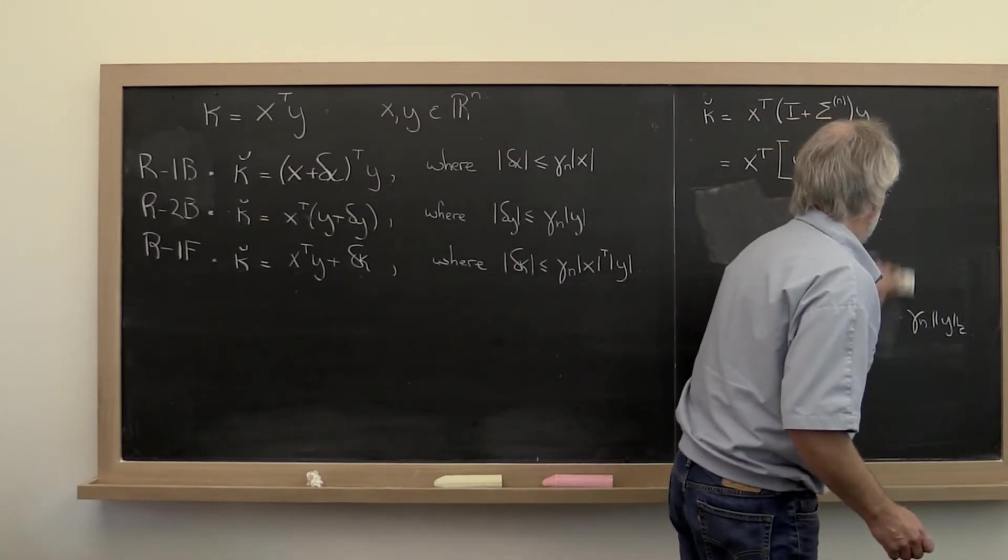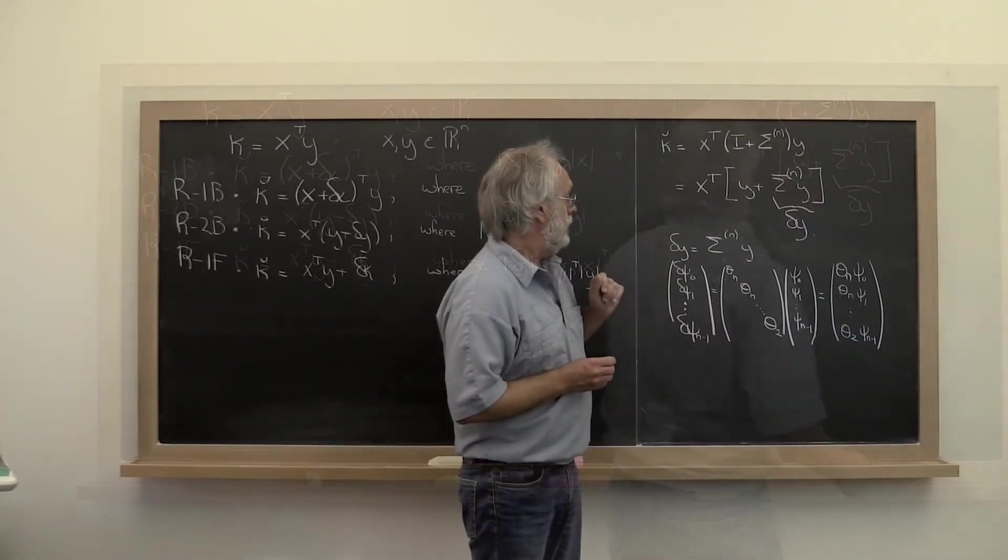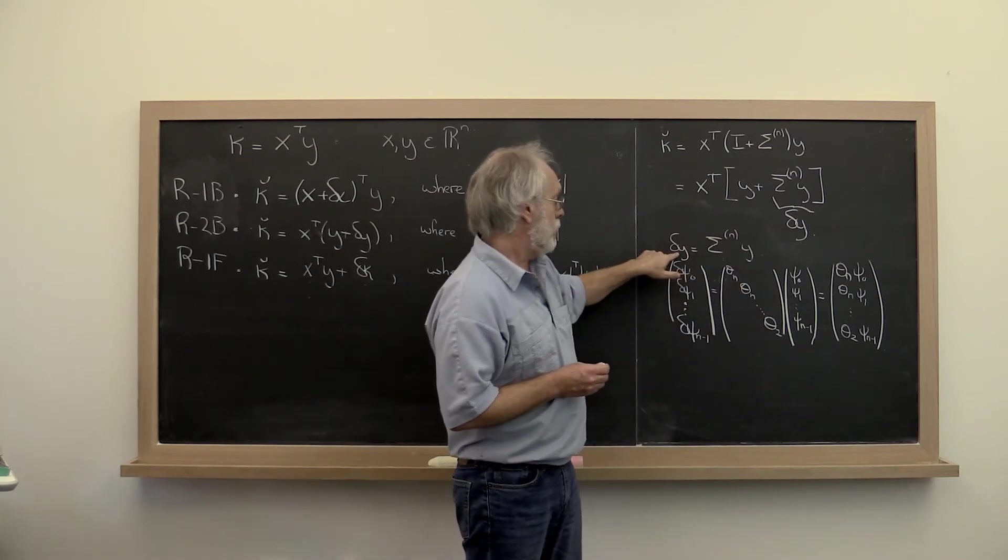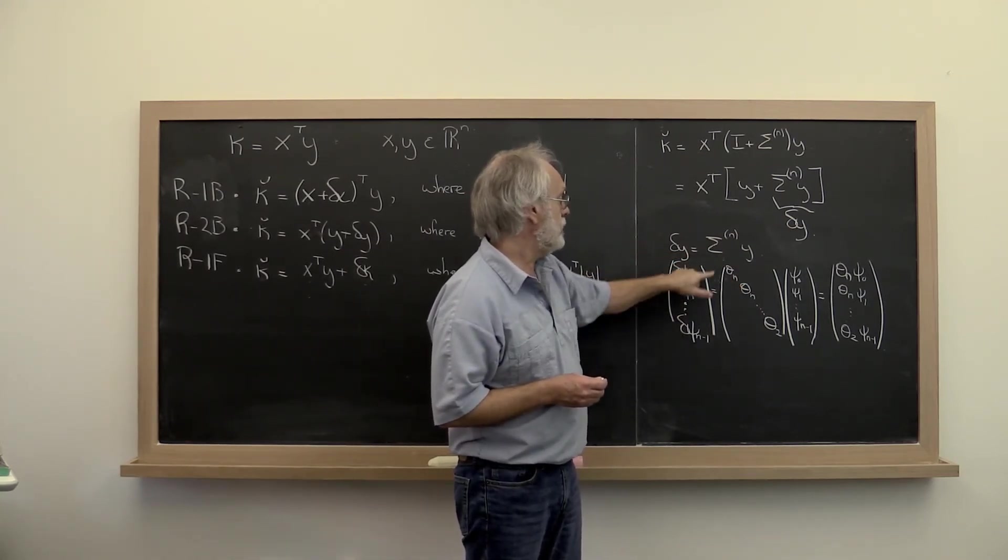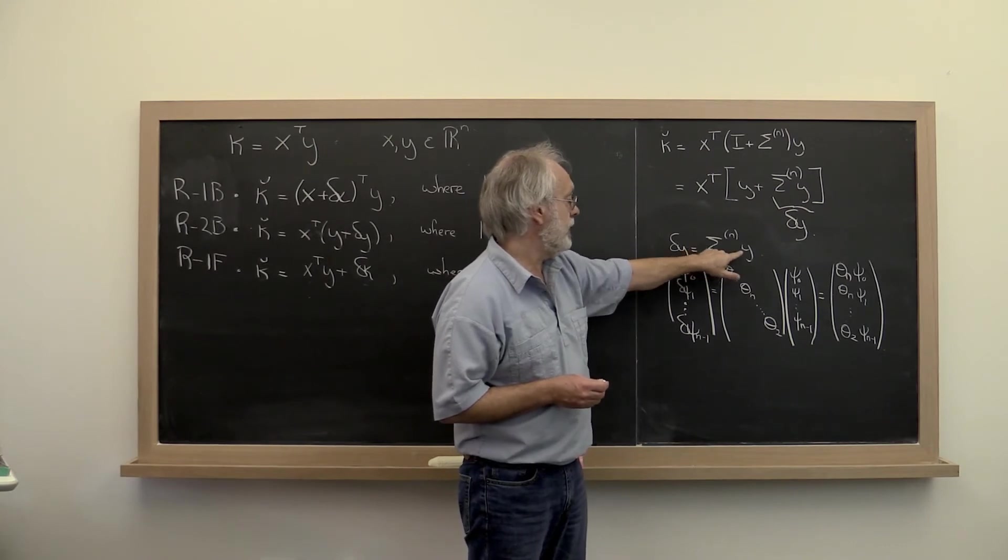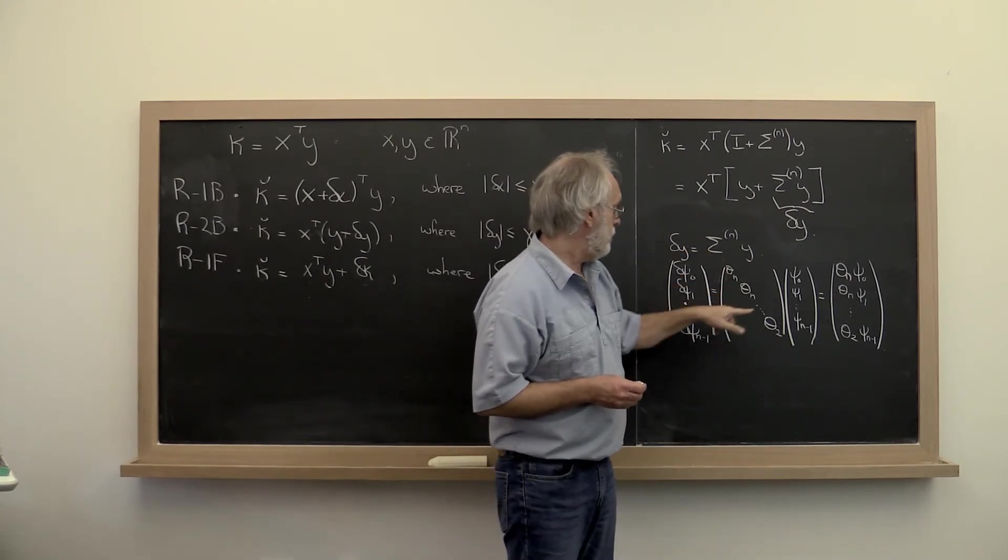So for that reason we introduce a new notation. Let's motivate that notation. If we now look at delta y more carefully by exposing its individual entries as well as the individual entries of sigma n and y, we get this right here.